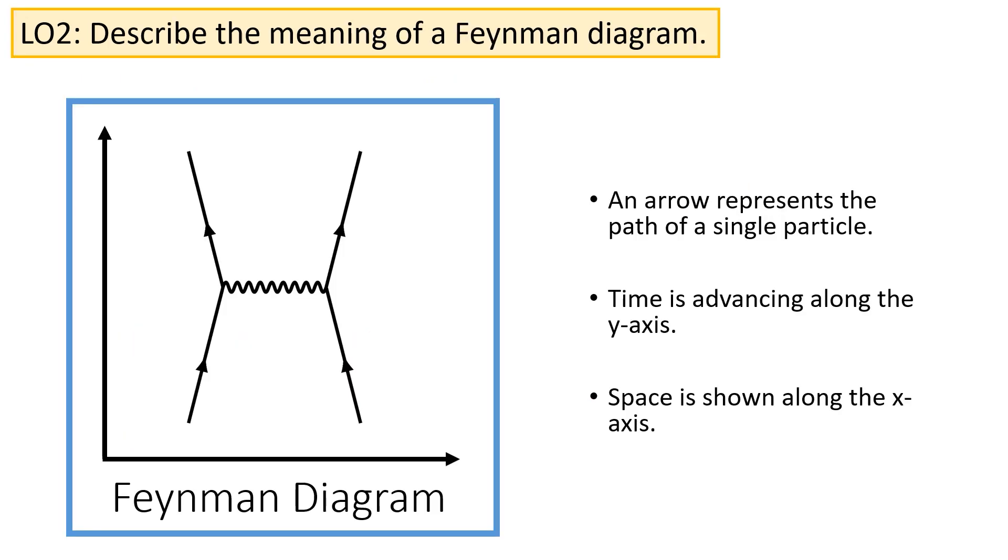Next up, we have Feynman diagrams. Feynman diagrams are a convenient way to represent the interactions between particles. On a Feynman diagram, an arrow represents the path of a single particle. On the y axis, we have time advancing and on the x axis, we have space. Generally speaking, however, these are not included when we draw Feynman diagrams.